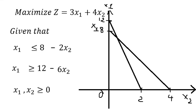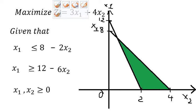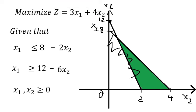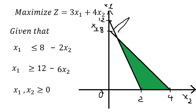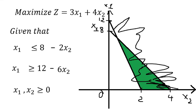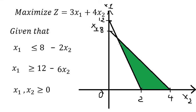After we graph everything, the area we need to concentrate on is about this one. Because for the first constraint, this area combined with the area from the second graph gives us this feasible area only. Now we need to find the intersection point in here.